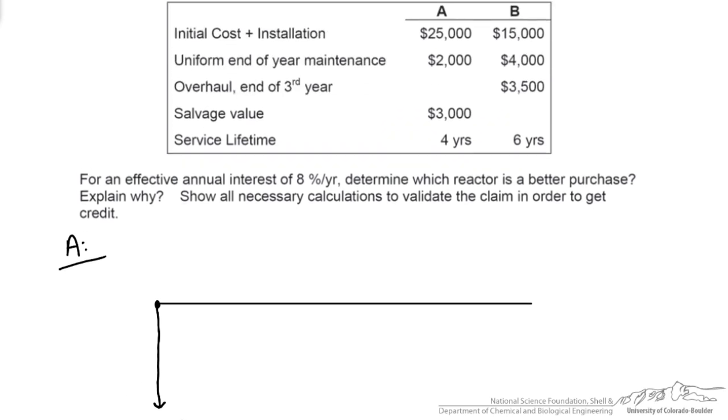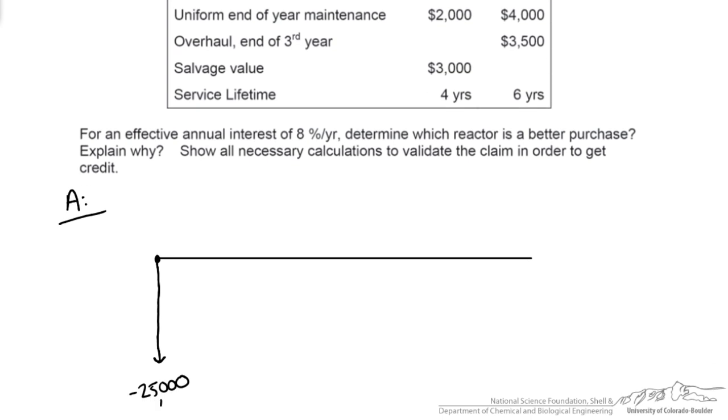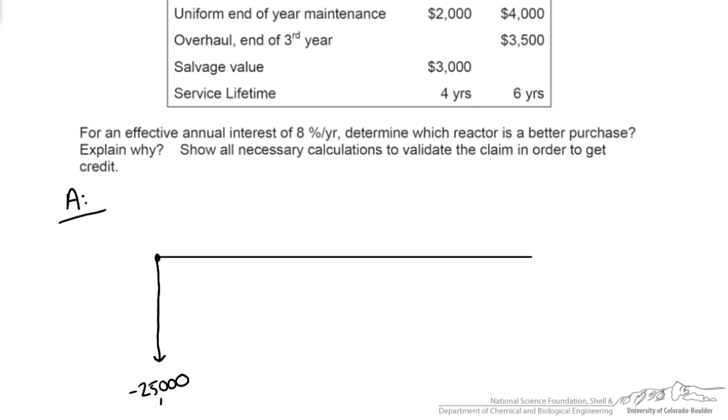Now every year after that we're going to have maintenance charges of $2,000. This is going to be for up to four years since that's the lifetime of reactor A. Since we're comparing it on an equal time scale, we need to find a common multiplier between the two reactors. So we can compare this on a 12 year scale. So we're going to draw $2,000, that's negative, every year for the first four years.